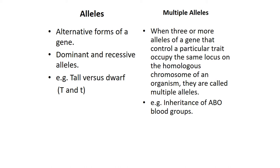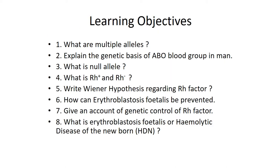Each gene has an alternative form called an allele. When three or more alleles of a gene that controls a particular trait occupy the same locus on the homologous chromosome of an organism, they are called multiple alleles. For example, inheritance of ABO blood group is the best example of multiple alleles.